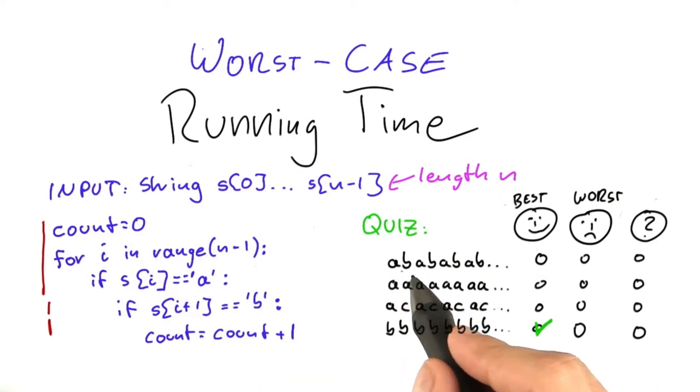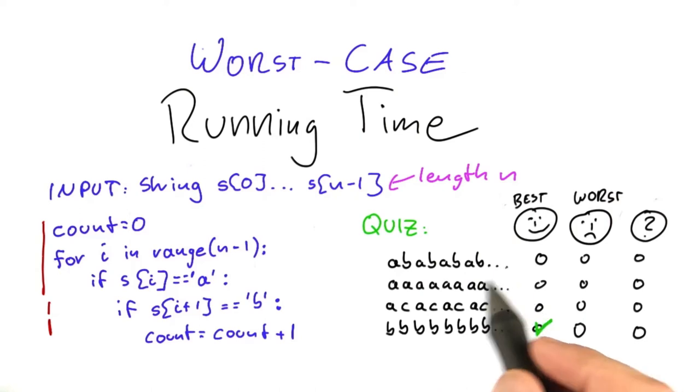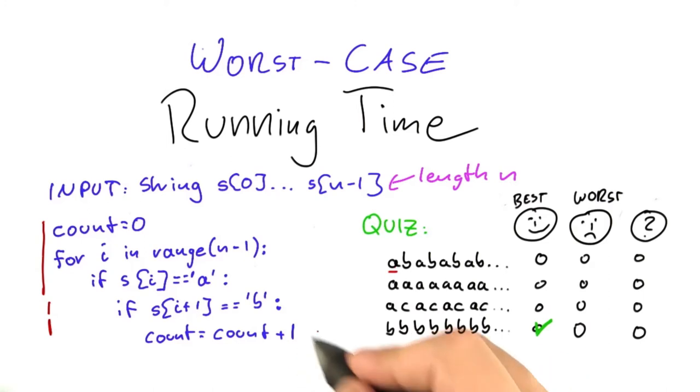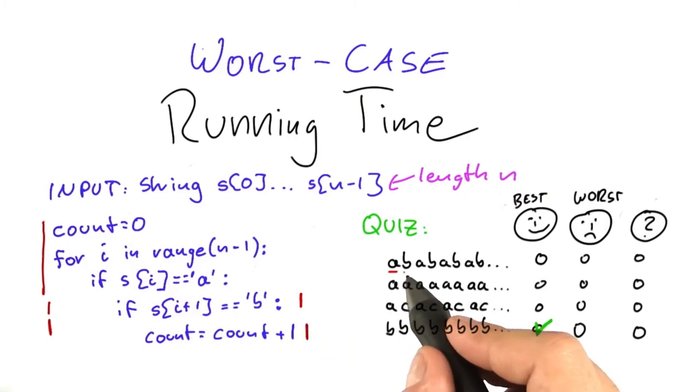So if the string looks like A, B, A, B, A, B, and so on, then every time that the algorithm encounters an A, it will execute this line down here, and it will also execute this line down here because the next letter is a B.